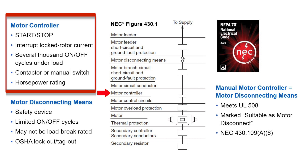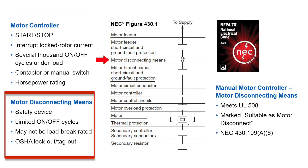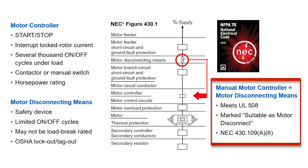In addition to its current rating, a motor controller will also have a horsepower rating. The motor disconnecting means is more of a safety device, primarily used to de-energize the circuit during service. It's designed for limited on and off cycles and must have a provision for being locked in the off position to ensure the circuit cannot be re-energized. A manual motor controller can also serve as the motor disconnecting means if it meets certain requirements of the UL 508 standard and is marked suitable as motor disconnect — in other words, the controller and the disconnect can be the same piece of equipment.